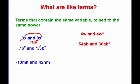Similarly, 7b squared and 1.5b squared, they both have a b, and they're both raised to the second power. So they're like terms. And if I combine them, 7 plus 1.5 is 8.5b squared.